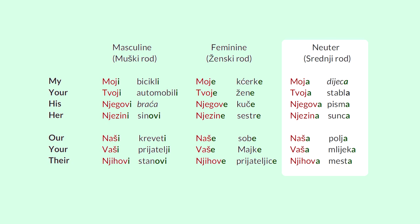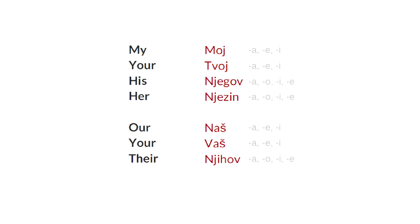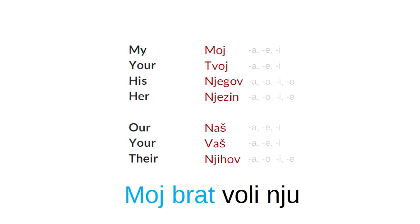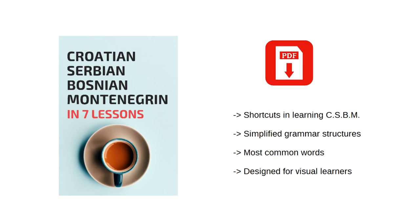So the E or O ending will change into an A. The most important part is the root — how to say my, your, his, her, our, your plural, and their. Because if you know how to say that, you can divide things. You can say that's mine, that's yours, my brother loves her. I'm now finishing a book with all the shortcuts for learning Serbian in Bosnia and Montenegro. If you want to learn more about the book and how to get it, contact me. До вичения. Видимо се.